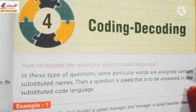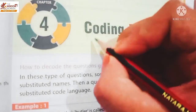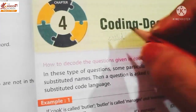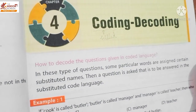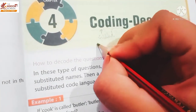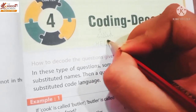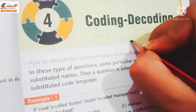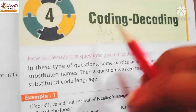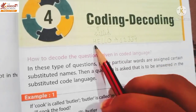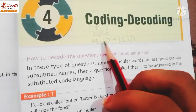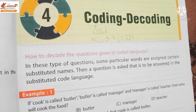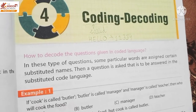So students, coding ke liye word use hota hai 'cold'. Like, agar main apko bolu, maine ye 'hello' word kod kiya hai - H represents one, E represents two, L represents three, O represents four. So if I say hello is coded as one, two, three, three, four - this is coding.